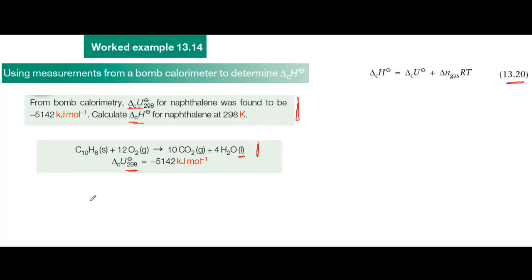Now you need to work out delta N gas, and this is the difference between the number of moles of gas in the products which is 10 minus the number of moles of gas in the reactants which is 12 and so that comes to minus 2. It has no units.